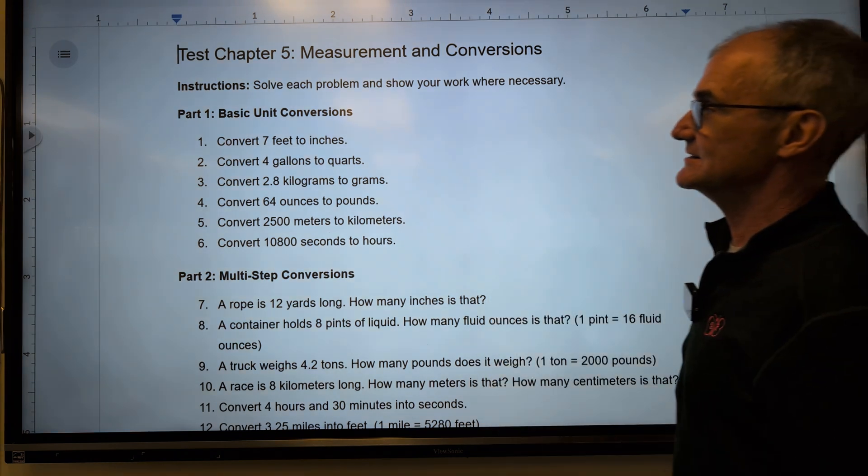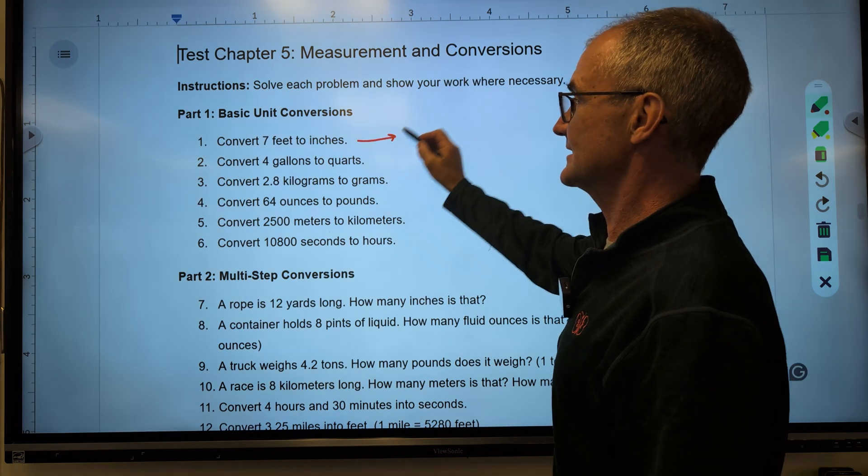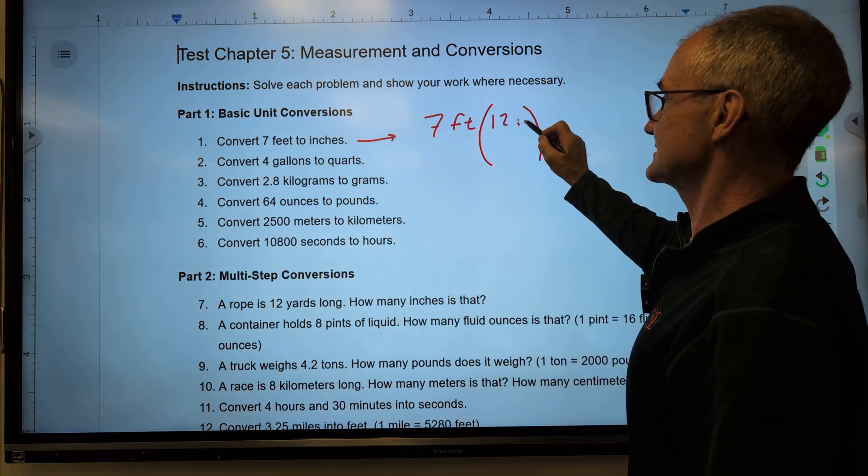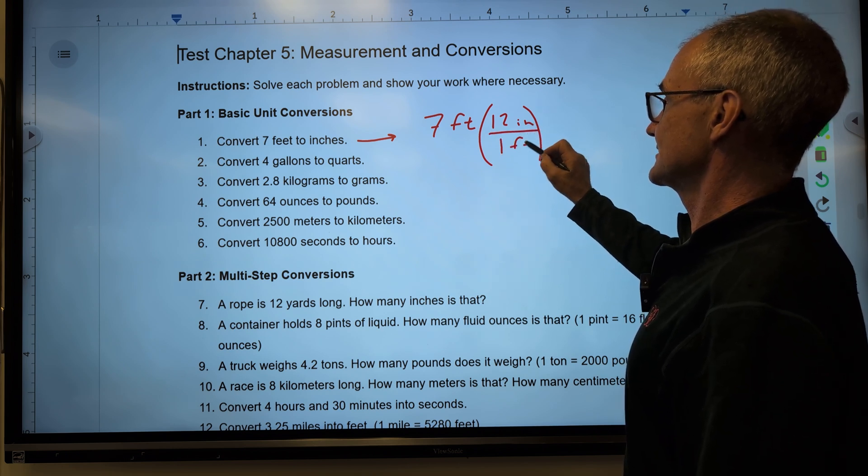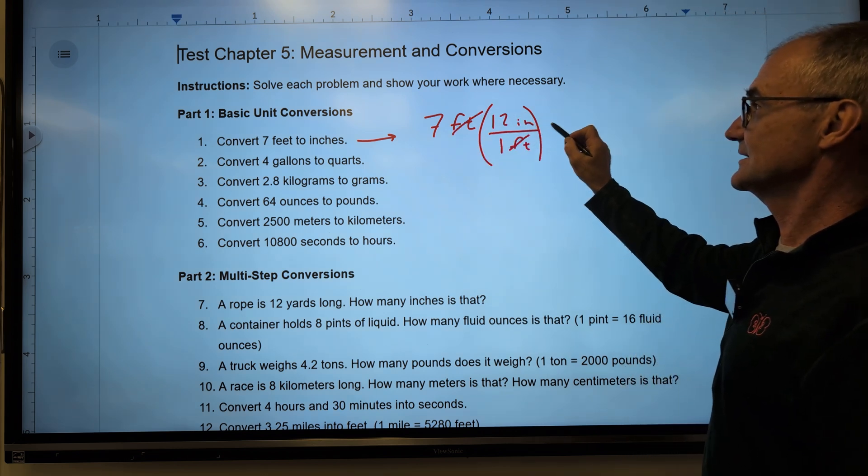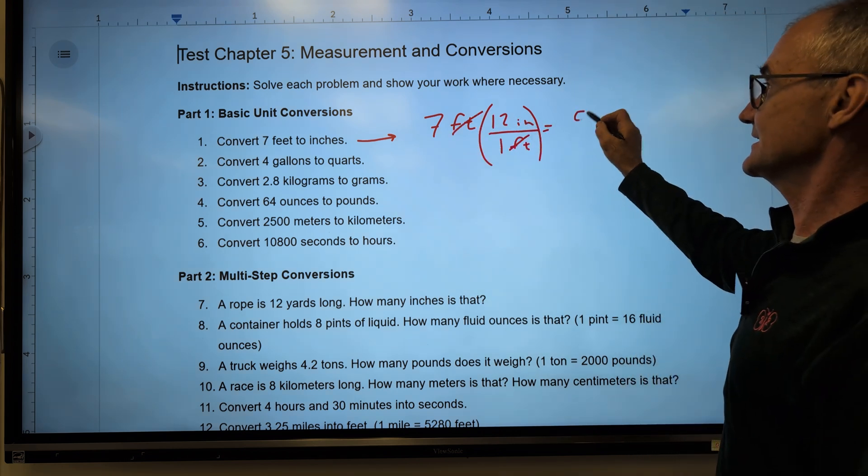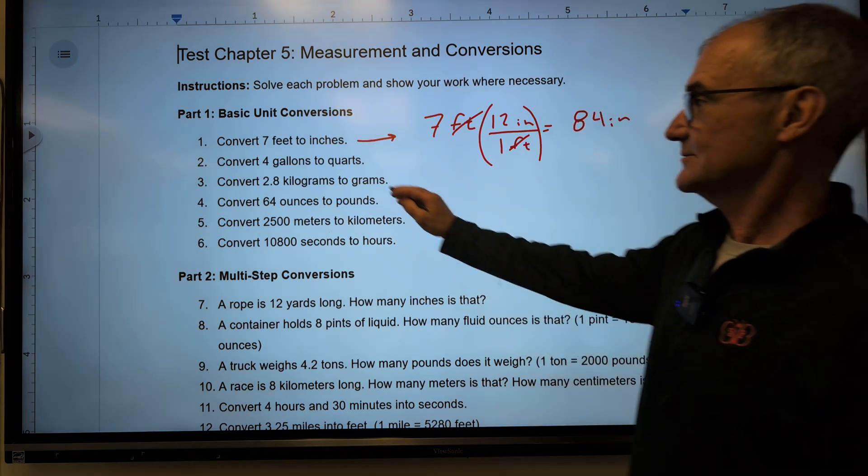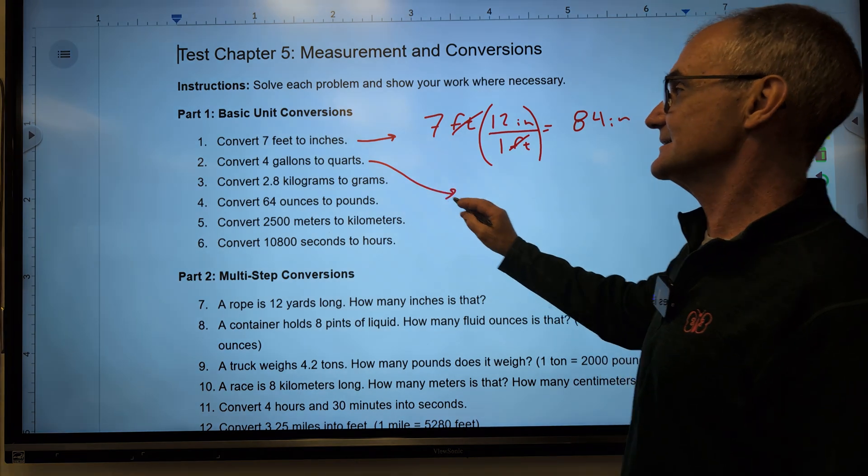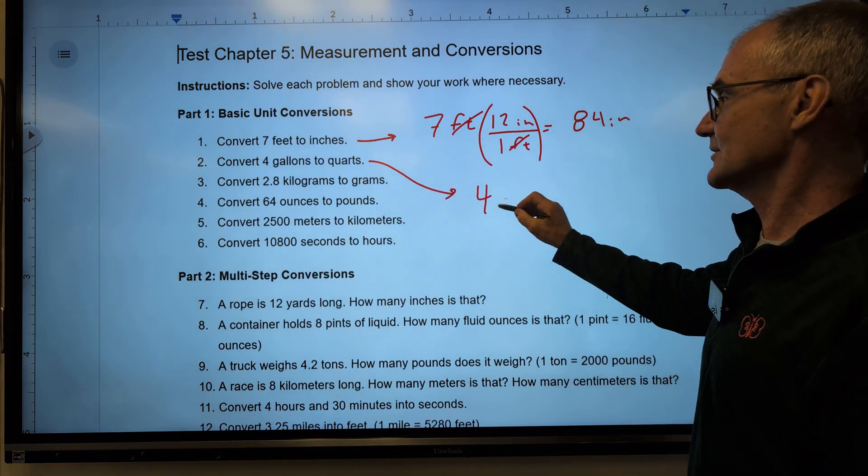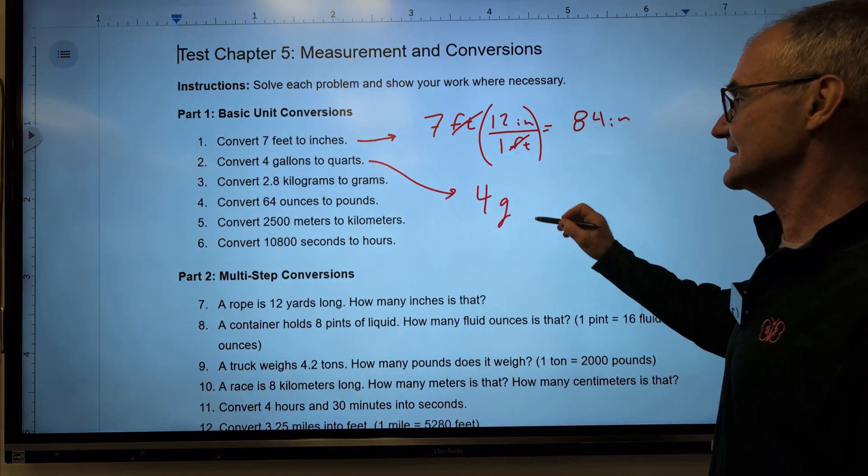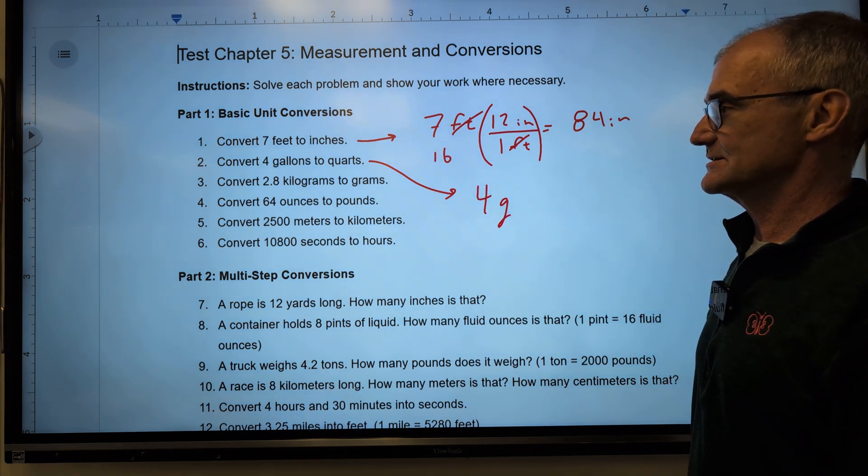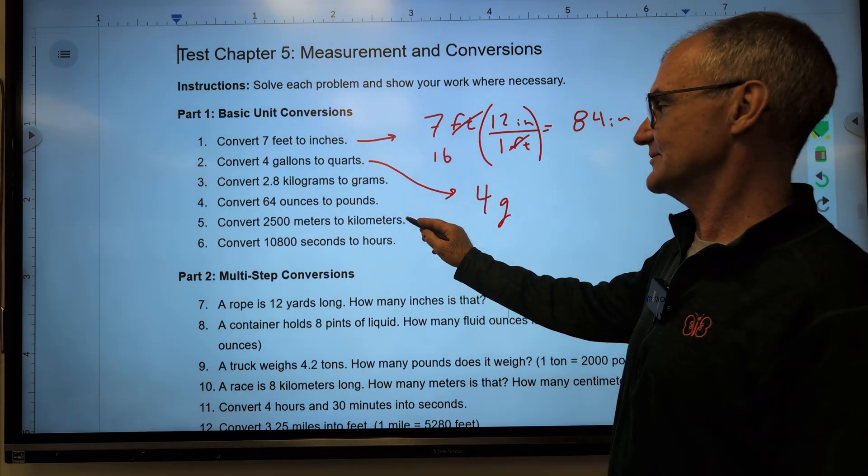Okay, so on test chapter 5, basic unit conversions. Convert 7 feet to inches. So I'm going to take 7 feet. I want inches, 12 inches to the foot. My feet cancel. That's going to give me inches, 84 inches. We'll convert 4 gallons to quarts. 4 gallons. Well, there are 4 quarts to the gallon, so this is going to give me 16 quarts. Let me jump down to number 5 here.